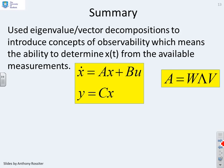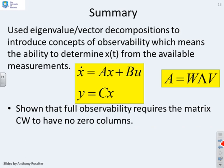So in summary, we've used the eigenvalue vector decompositions to introduce concepts of observability, which means the ability to determine x of t from the available measurements. We've shown that full observability requires the matrix CW to have no zero columns, where W is the matrix of eigenvectors.